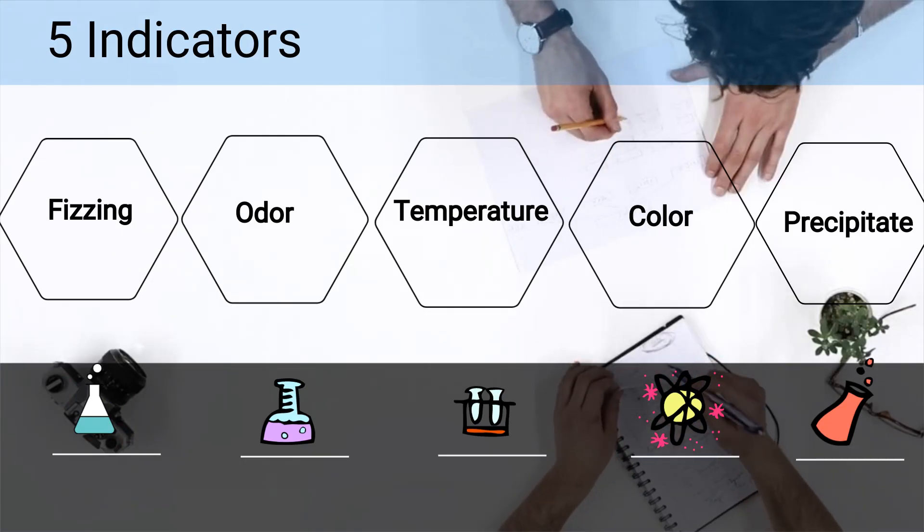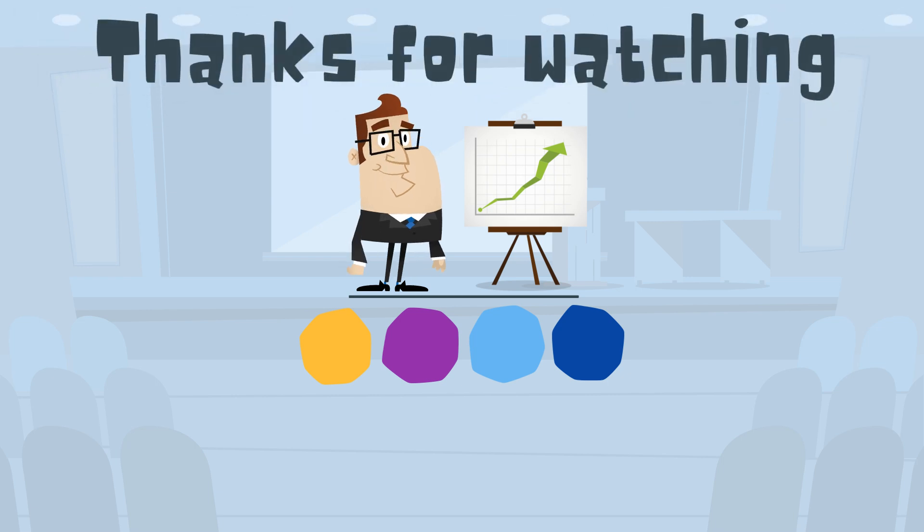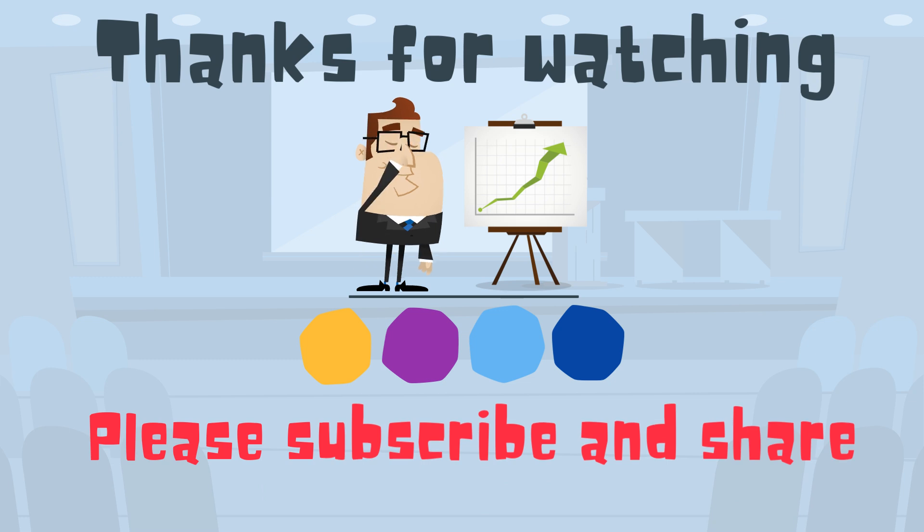So there we go, the five indicators of a chemical reaction. Thanks for watching, and MooMooMath uploads a new math and science video every day. Please subscribe and share.